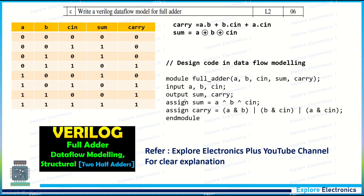Write the Verilog data flow model for a full adder. In data flow modeling we use assign statements. Write the truth table, derive the expressions for Carry and Sum, and make sure the expressions match the assign statements. Don't forget to write the expressions, because the complete code depends on them. The variables used in the truth table should also match those in the code.